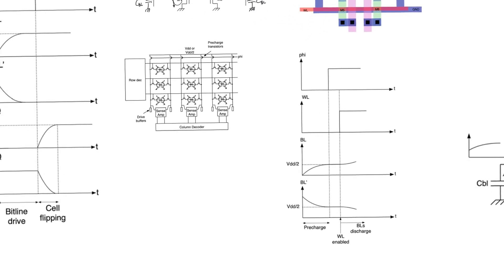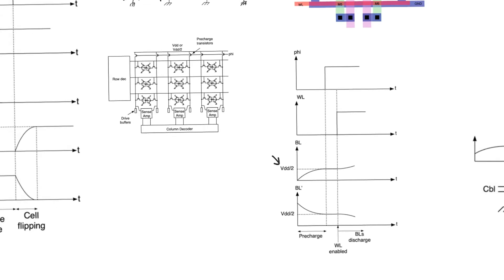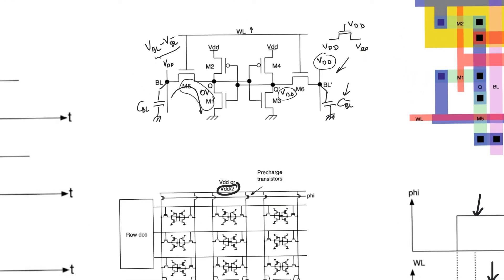What's actually better is to pre-charge bitline and bitline bar to a value of VDD/2, using VDD/2 at the sources of the pre-charge PMOS transistors. When phi is equal to 0, we pre-charge bitline and bitline bar to VDD/2. It's very important that both lines are at the exact same voltage, so we must wait until they are completely equalized before starting the read operation. We then turn off the pre-charge transistors by raising phi, and when we turn on the wordline, both sides of the storage cell work to discharge and charge the bitline capacitors.